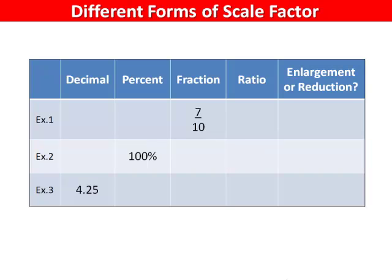Let's fill in the chart to make sure we're comfortable with converting between different forms of scale factor. Our first example is seven divided by ten, so as a ratio would be seven to ten. Seven divided by ten is zero decimal seven, so that's our decimal value.